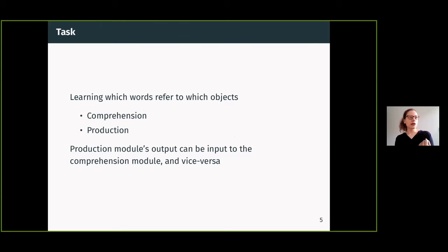What is the task that we're modeling? We're modeling basically a two-part task. One is figuring out which object is the correct reference for a label, and the other is which is the correct label for an object. We have a comprehension task and a production task.